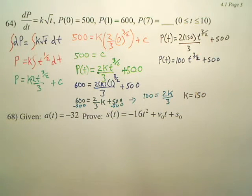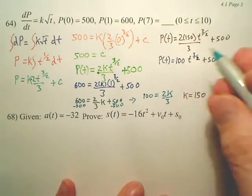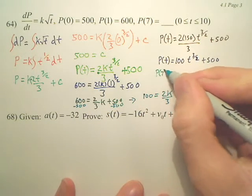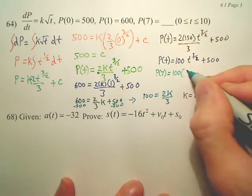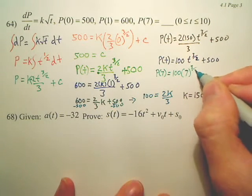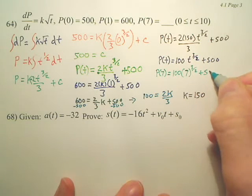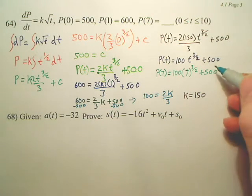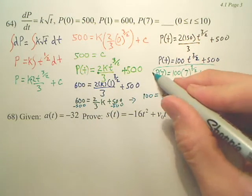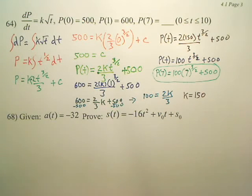Now what's our last problem? We're asking to plug in 7. So P(7) looks like it's going to be 100 times 7 to the 3 over 2, plus 500. And could we calculate that with a calculator? Without a calculator, yuck. With a calculator, we're done. I'm actually just going to put that as my answer because I don't have a calculator with me. If I had a calculator, I'd find it.